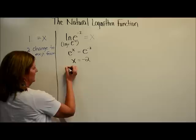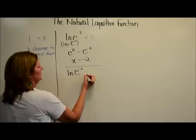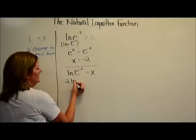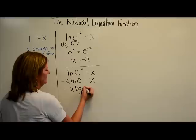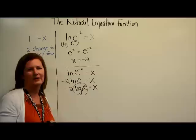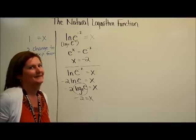There's another way to look at this. You can use log law 3 and say negative 2 times ln of E equals x, which is negative 2 times log base E of E. We know that goes to 1, so negative 2 times 1 equals x. Just a couple of different ways you can look at it.